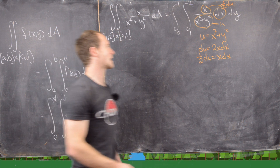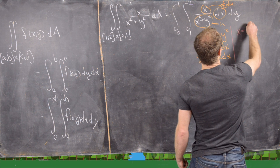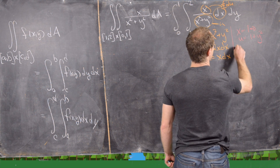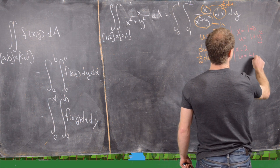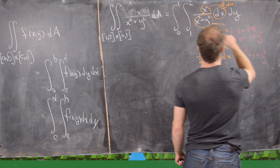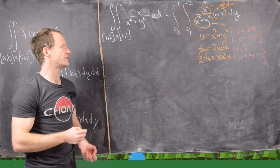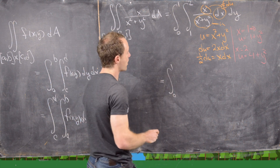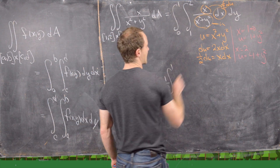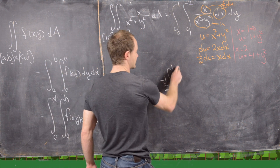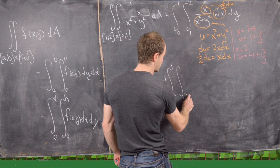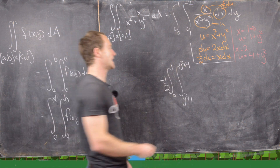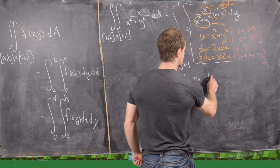That makes du equal to 2x dx, so one-half du equals x dx. The numerator x dx becomes one-half du and the denominator is just u. The new bounds: if x equals 1, u equals 1 plus y squared; if x equals 2, u equals 4 plus y squared. So we have the integral from 0 to 1 of one-half times the integral from y squared plus 1 to y squared plus 4 of 1 over u du dy.